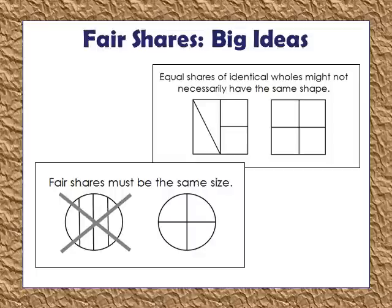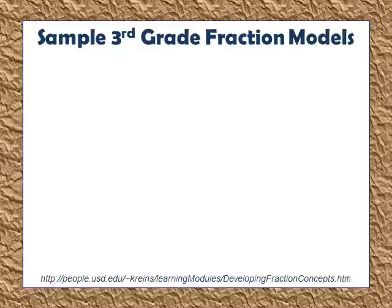I wanted to address the different fraction models students could be exposed to at the third grade level. One model not shown here is the set model — a set of objects — and that's because we don't use set models until fourth grade, such as finding one-third of twelve counters. The models we focus on in third grade are number lines and area models, like square, rectangular, or circular areas.